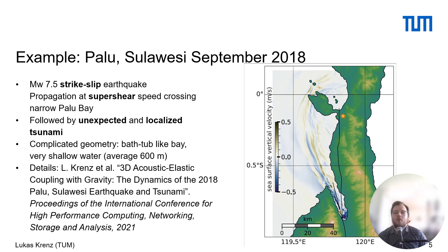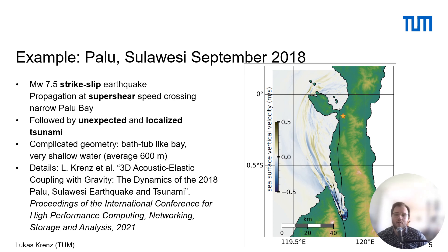The first scenario I want to talk about is the Palo Sulawesi earthquake-tsunami of September 2018. It was a magnitude 7.5 strike-slip earthquake which propagated at super-shear speed, crossed the narrow Palo Bay, and was followed by an unexpected and localized tsunami — unexpected because earthquakes of this type typically don't generate tsunamis. On the right, you can see a snapshot of the vertical sea surface velocity and the simulation domain. The epicenter is noted by the star, the black lines denote the fault zone, and at the bottom of the map you have Palo.